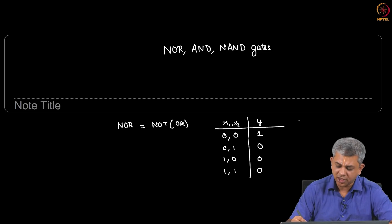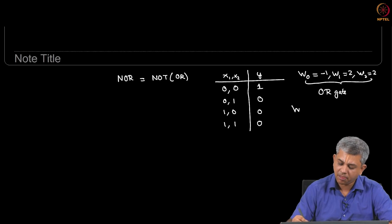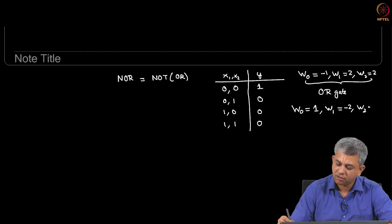But essentially you can probably see that if you remember that W0 was minus 1, one possible set of values, this was the OR gate. You can guess that flipping the weights and making W0 equal 1 and W1 and W2 negative of this will give us NOR gate.